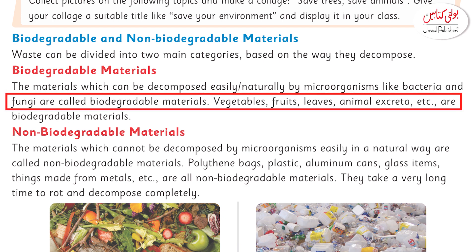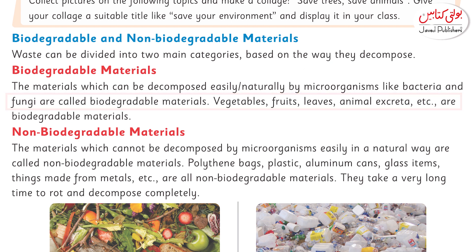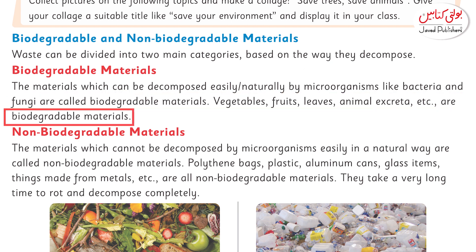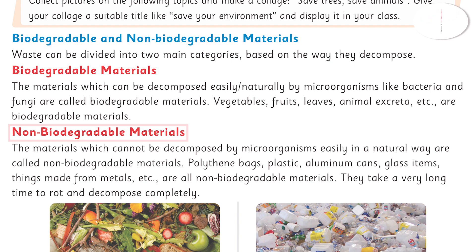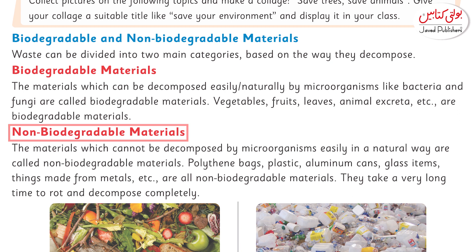Examples of biodegradable materials include vegetables, fruits, leaves, and animal excreta. Now, non-biodegradable materials are those which are not decomposed naturally. We will have to introduce steps to deal with them.